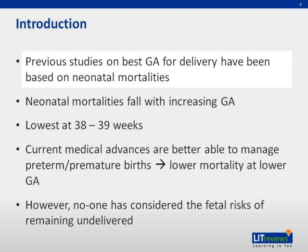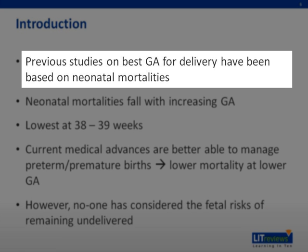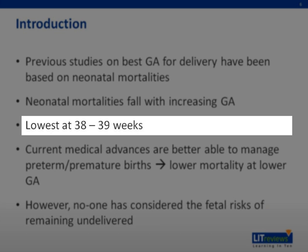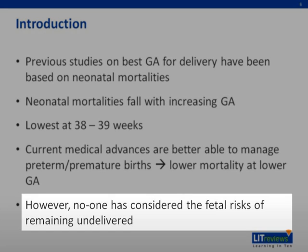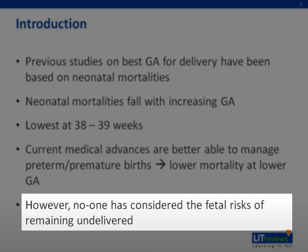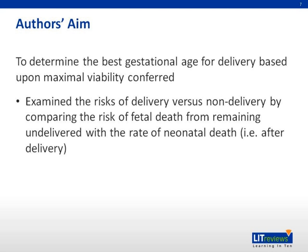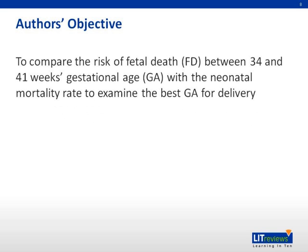This study was conducted because previous studies on the best gestational age for delivery had only looked at problems arising from prematurity and based it on neonatal mortalities. The best gestational age was determined to be between 38 to 39 weeks. However, no studies had examined the fetal risk of intrauterine death resulting from remaining undelivered. The authors set out to redefine the best gestational age by comparing both neonatal mortalities due to prematurity and fetal deaths from remaining undelivered, specifically looking at gestational ages between 34 and 41 weeks.